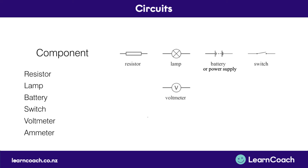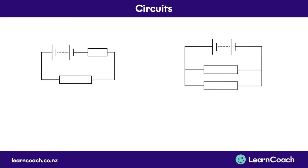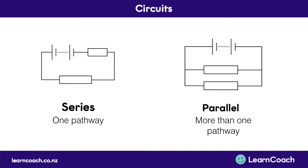This is our voltmeter — it measures the amount of voltage over a certain resistor or component. And this is our ammeter, which measures current. These are our two types of circuits: the series circuit, which has one pathway, and parallel, which has more than one pathway. In the series circuit, there's the same amount of voltage the entire way around, whereas in parallel, the voltage is split.